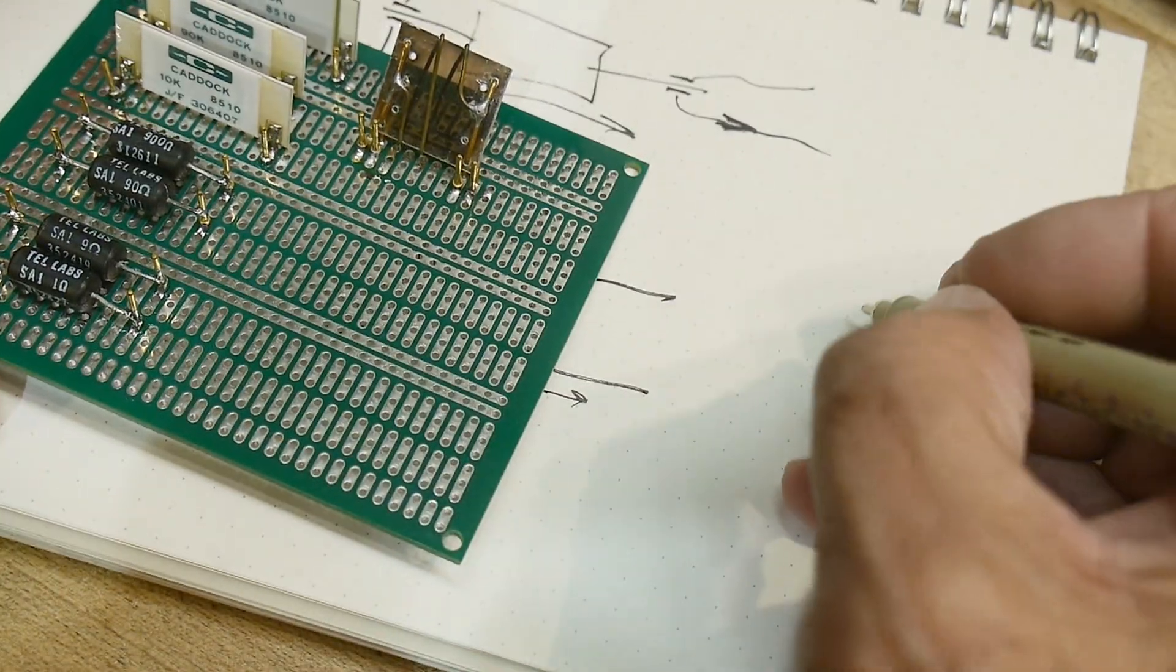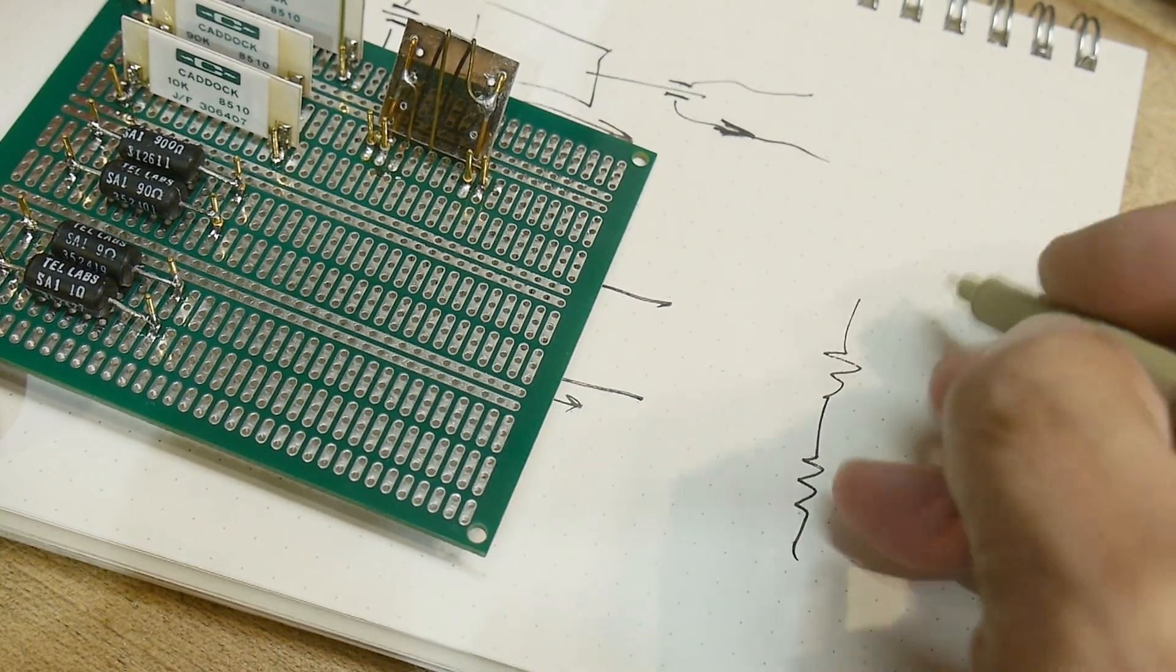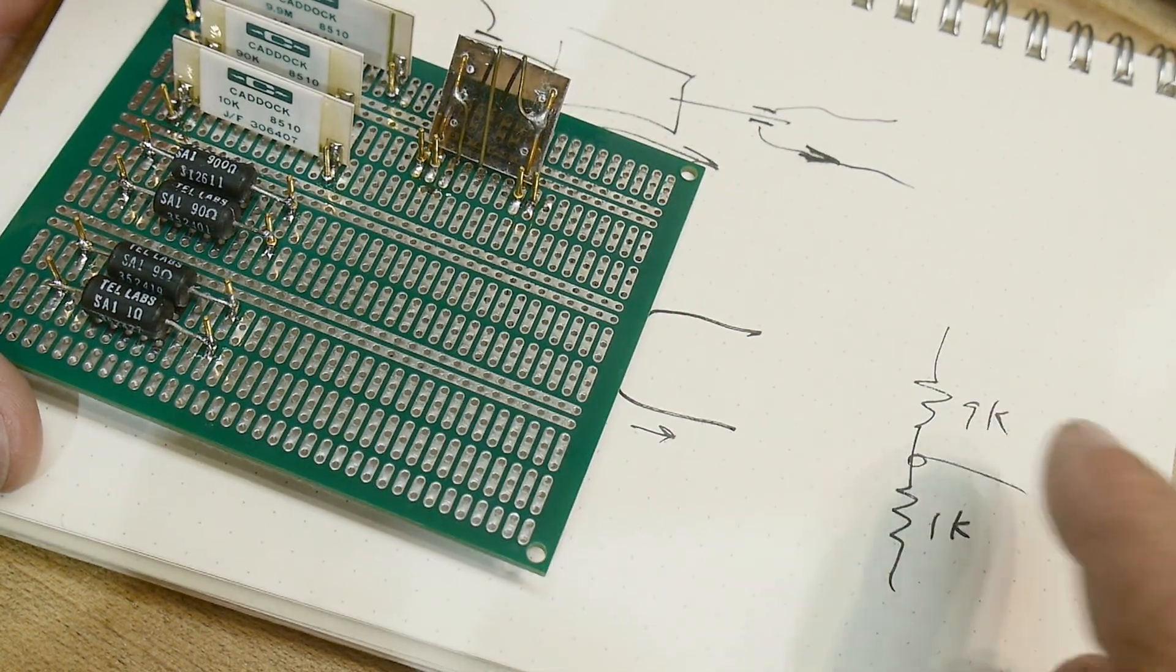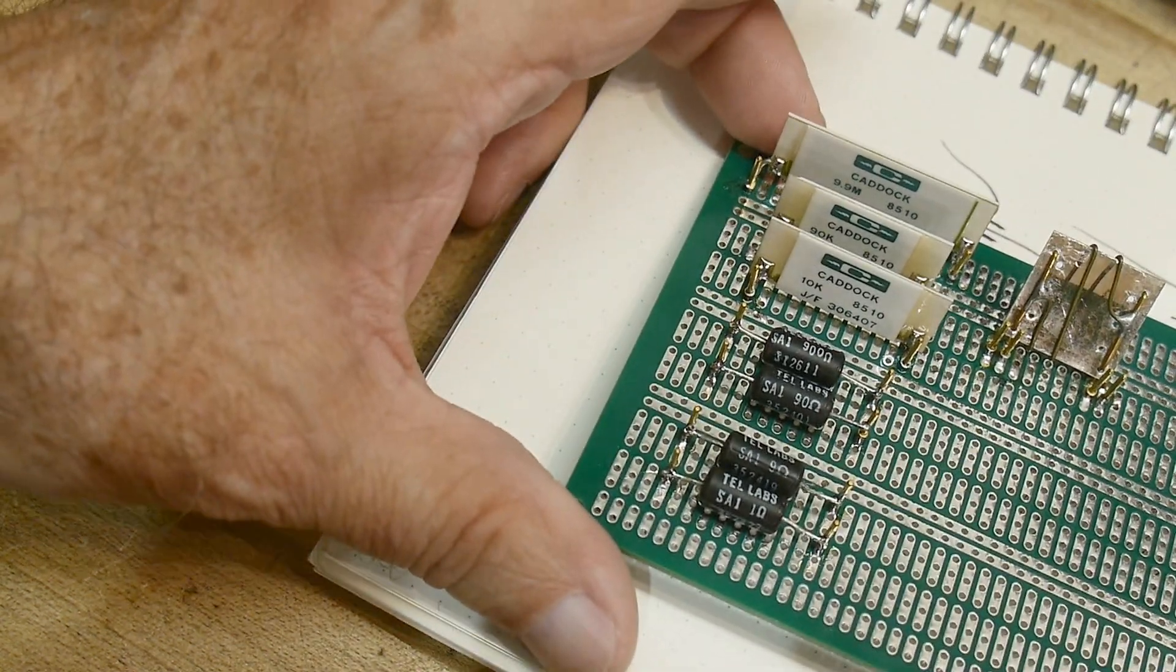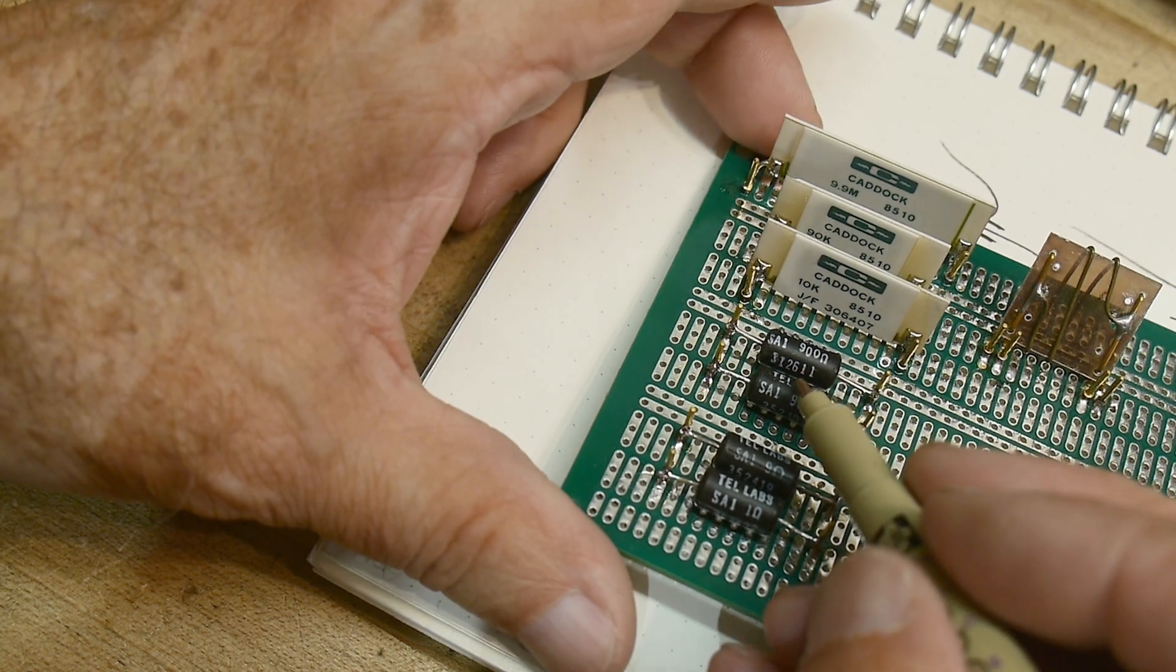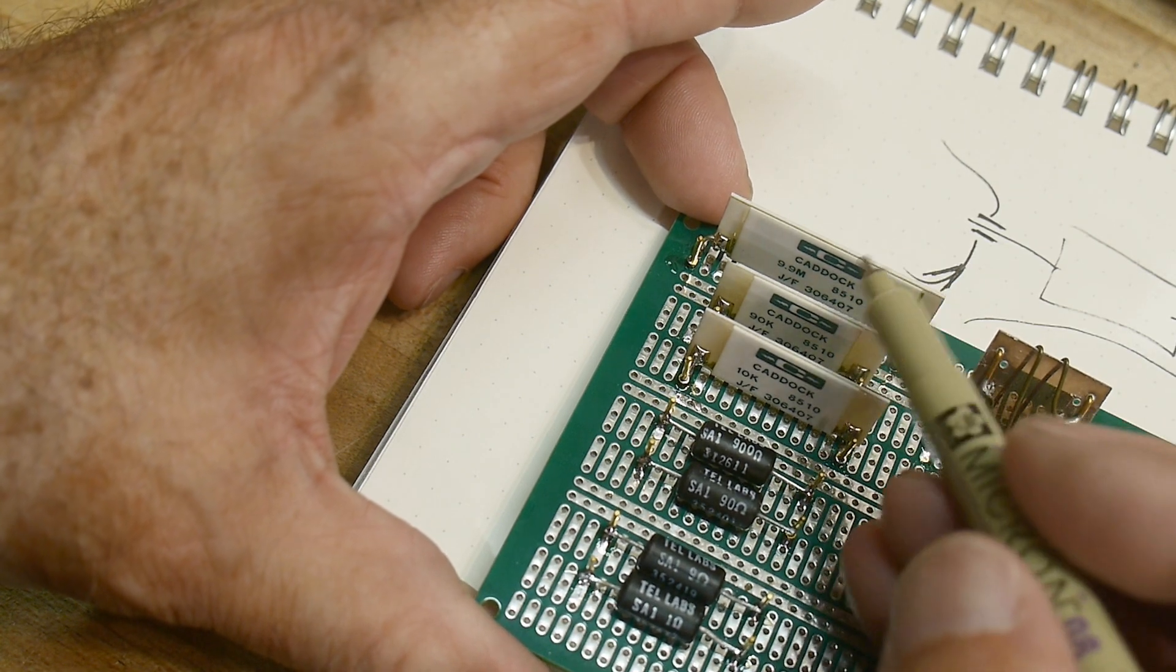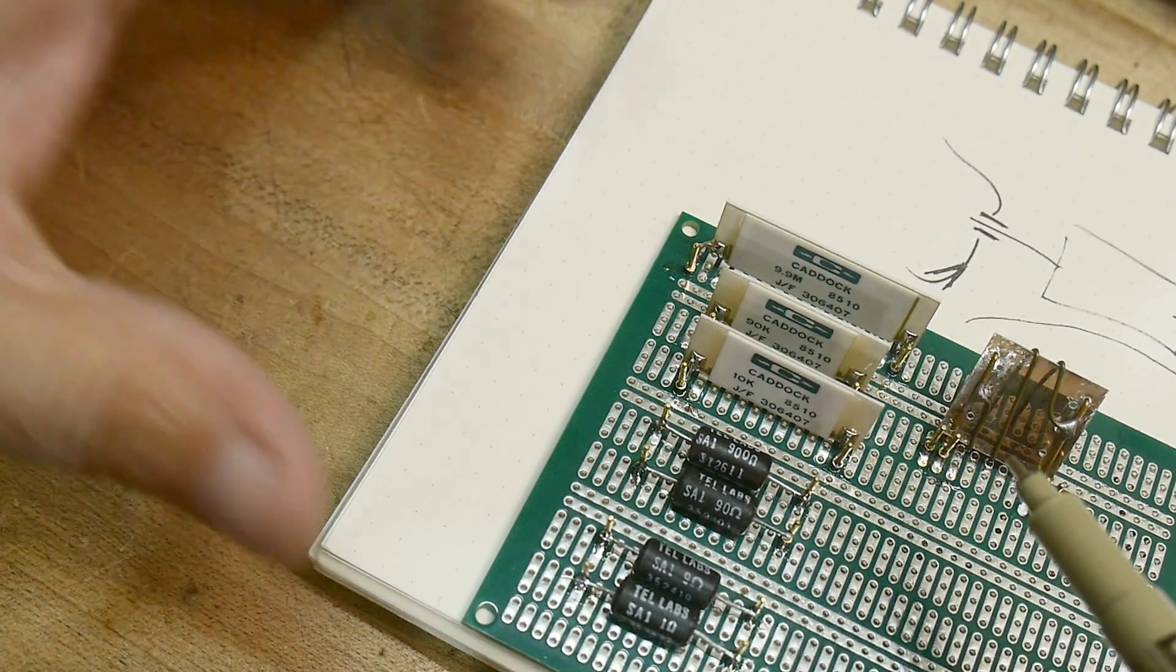Now why the funny values, why nines and ones? Well that's because if you put 1k and 9k you'll have a good divider, you'll have one-tenth in this particular situation. So you have a one ohm and then a nine, ninety, nine hundred, and then they start over with a different range which is a 10k and a 90k and then a 9.9 meg.